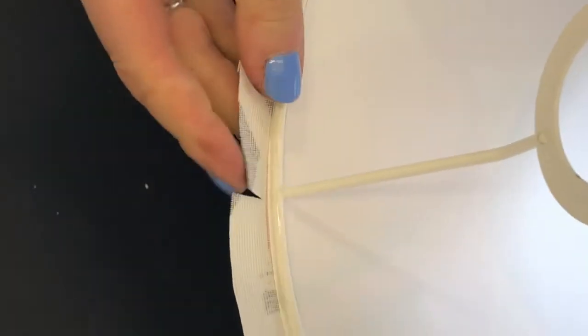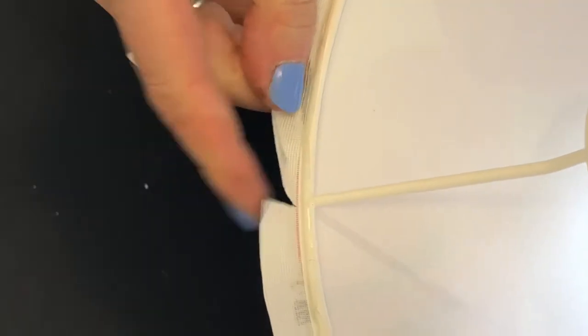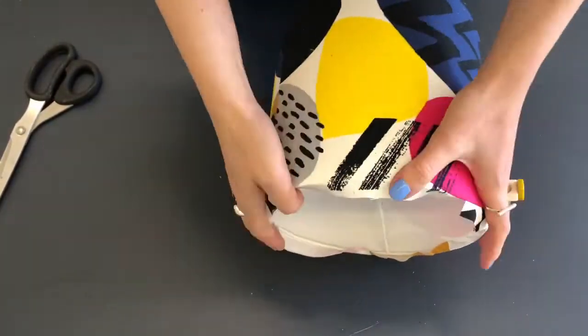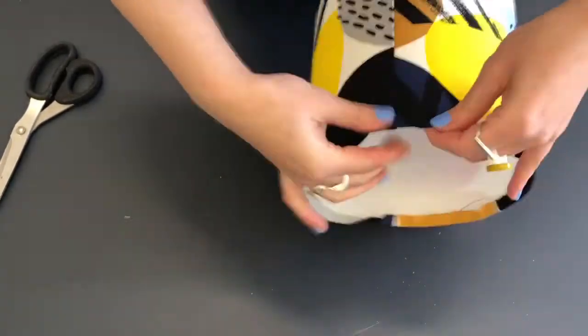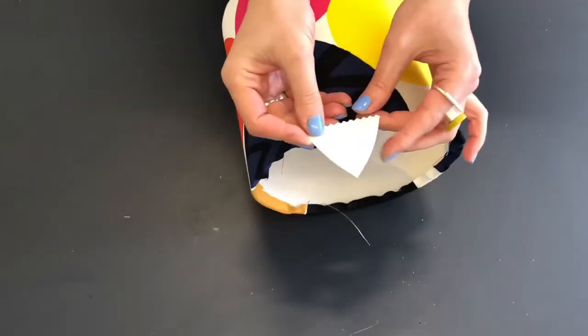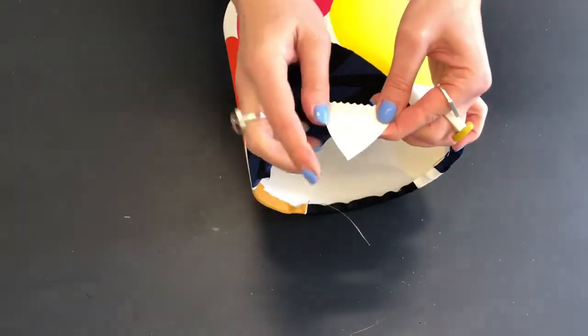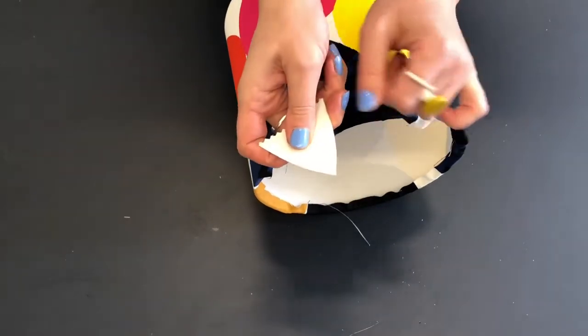So just a simple slit like that. That's just so the fabric can go around either side of your spoke. Now you can grab your tucking tool and I normally use this pointed end here to tuck in my fabric.